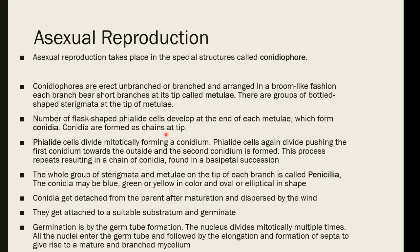From the sterigmata, conidia are produced in the form of chains. The phialide cells divide mitotically, forming conidia one by one. The first conidium is pushed outward, then a second forms, then a third, then a fourth — resulting in a chain of conidia. These chains of conidia look like a necklace or bead-like structure.